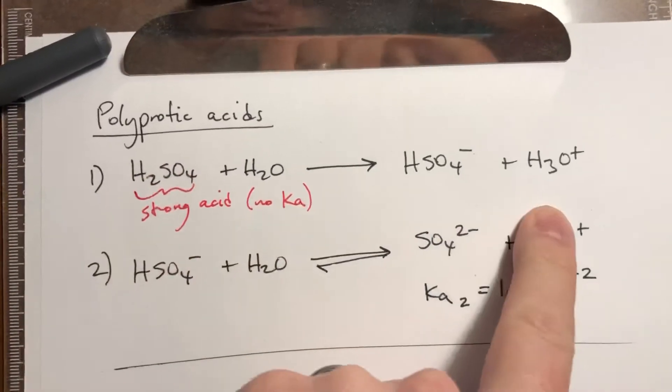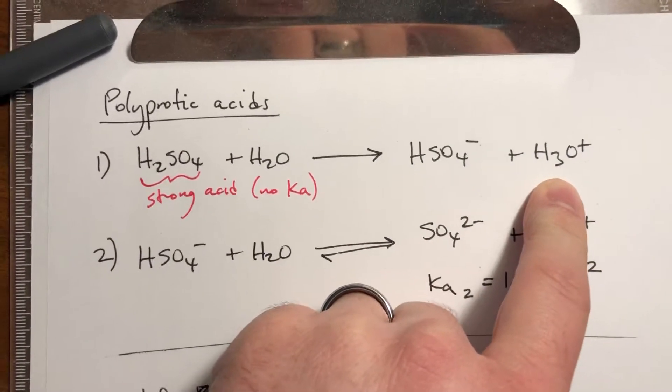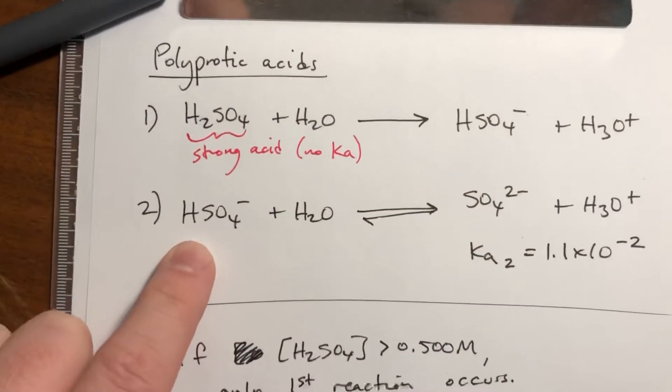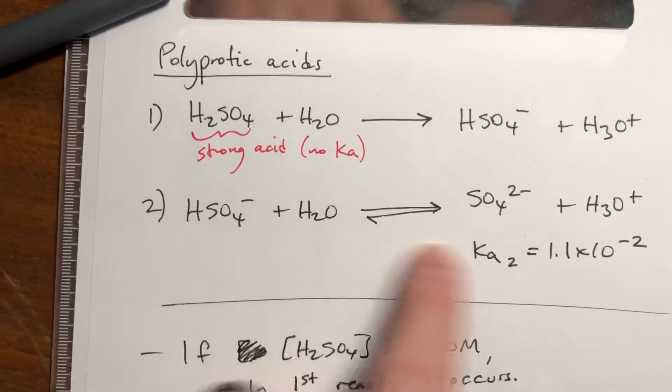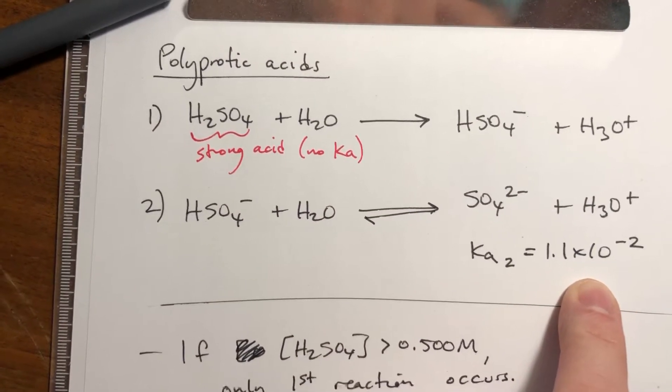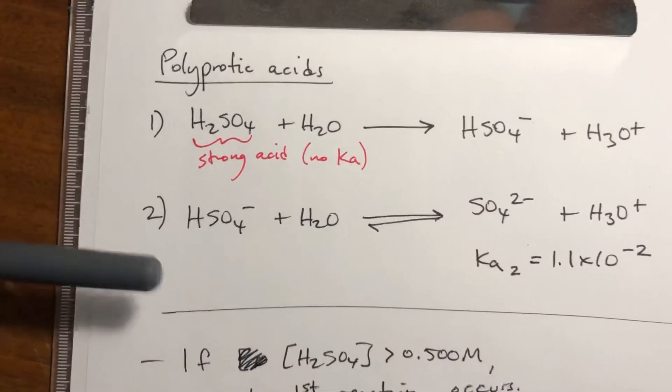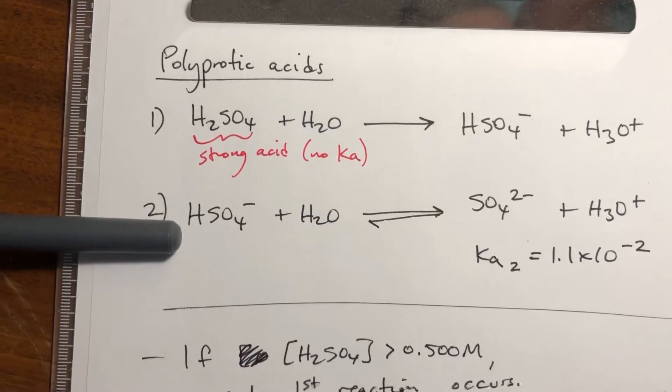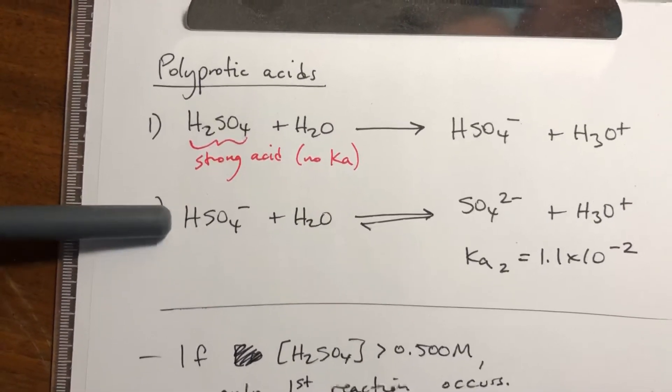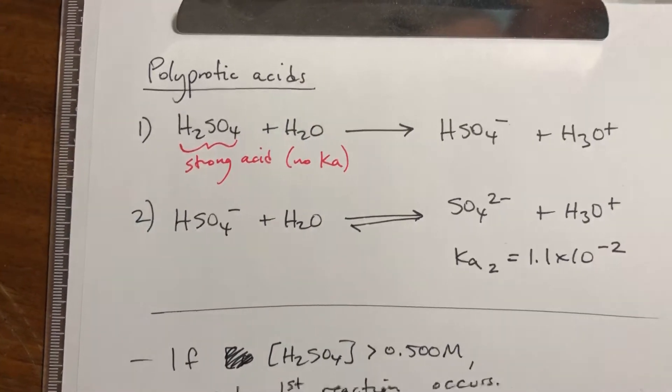There is no Ka value, this goes to completion, so whatever the concentration is, that's your concentration of H3O+. This HSO4- is a weak acid, so this one does have equilibrium and does have a Ka value. You'll note that the Ka value for this is higher than any of the Ka values for H2SO4, so even the second proton that's trying to come off from sulfuric acid is stronger than even the first proton coming off of phosphoric acid.